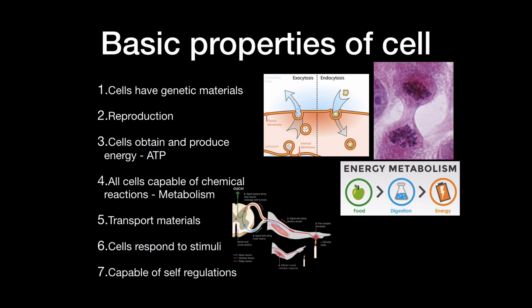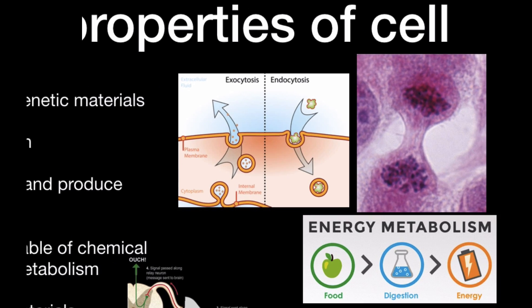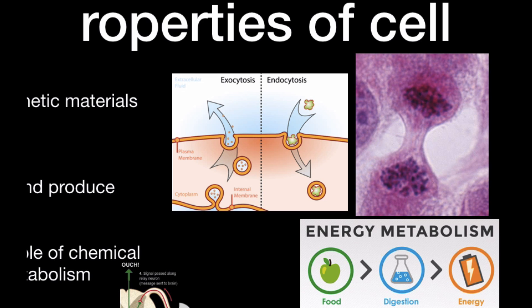Just to go through some basic properties of a cell: cells have genetic material — that's the purple in one cell as you see here — and they also reproduce via mitosis and meiosis. Cells obtain and produce energy and are capable of metabolism, so when you eat food it's digested and used to produce energy. Cells are also capable of transporting materials — here I've used exocytosis and endocytosis as examples, where the cell uses vesicles to transport materials outside and inside the cell.